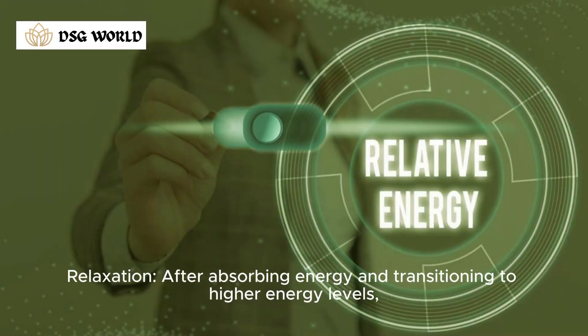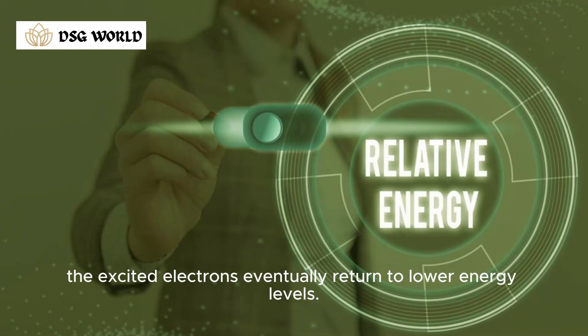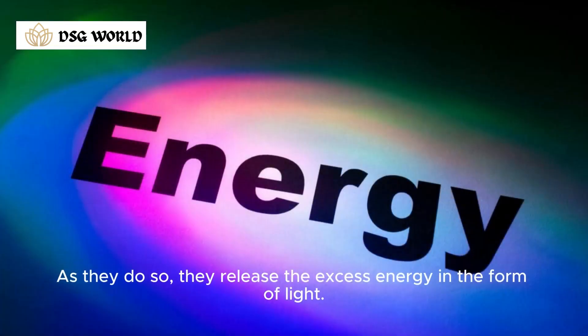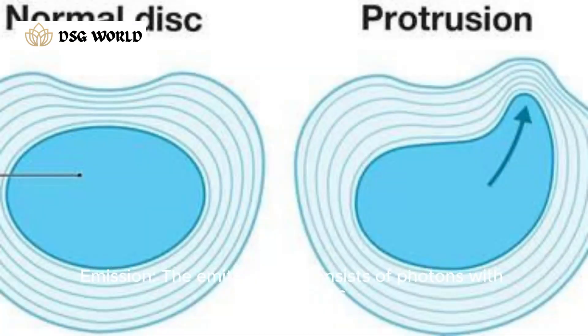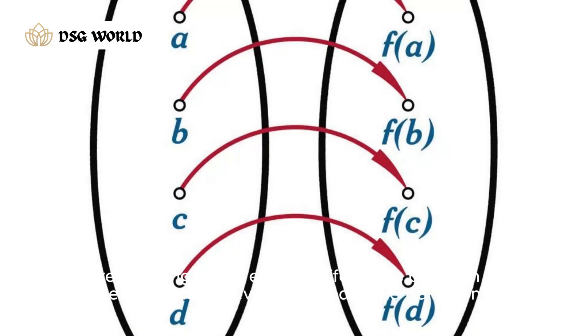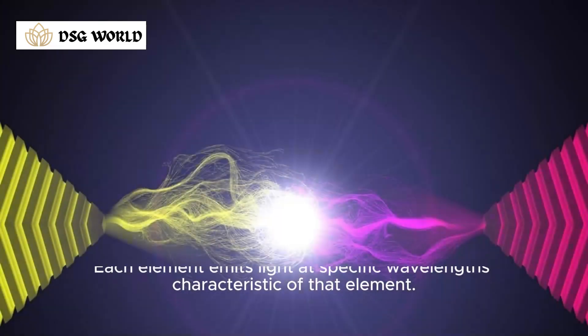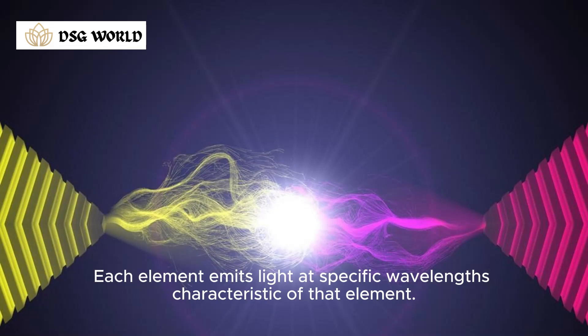Relaxation. After absorbing energy and transitioning to higher energy levels, the excited electrons eventually return to lower energy levels. As they do so, they release the excess energy in the form of light. Emission: the emitted light consists of photons with wavelengths corresponding to the energy differences between the electron energy levels involved in the transitions. Each element emits light at specific wavelengths characteristic of that element.